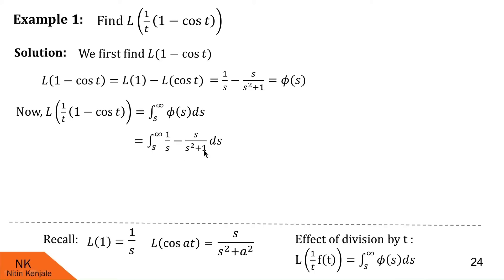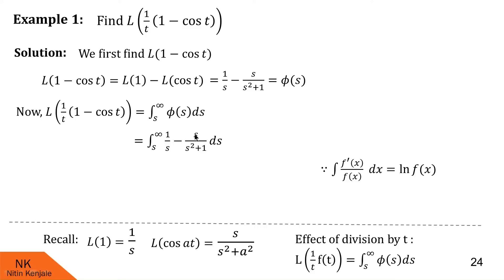Now let us integrate this using standard formulas. The integral of 1/s is log s. The integral of s/(s² + 1): since the derivative of (s² + 1) is 2s, we multiply and divide by 2 to get 2s in the numerator, so its integral is (1/2) log(s² + 1). So we have log s minus (1/2) log(s² + 1), with the minus sign as it is, over the limit s to infinity.